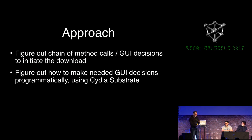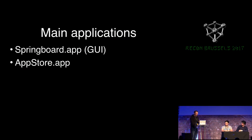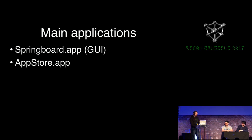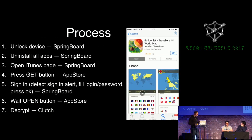We decided to go with the highest level possible and just use the graphical interface when convenient. That means we needed to figure out a chain of method calls and GUI decisions to initiate, manage, and load the app, and then figure out how to make the needed GUI decisions programmatically. To do that, we need to work with two built-in iOS applications: SpringBoard and the App Store app. SpringBoard is a central application in the iOS graphical interface, so we needed its runtime to make our GUI decisions, like dealing with system alerts. We also needed to use the App Store runtime to initiate the download, so we figured out this chain of method calls.